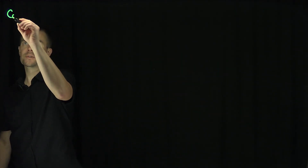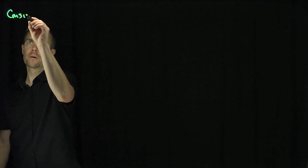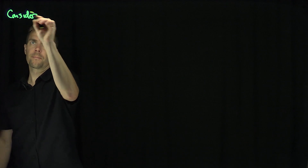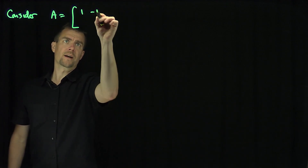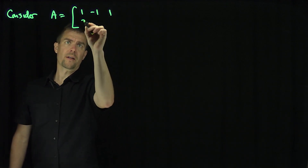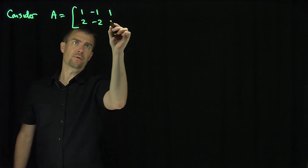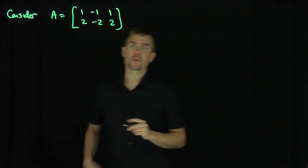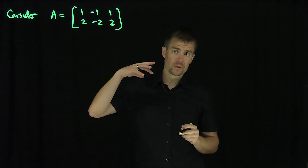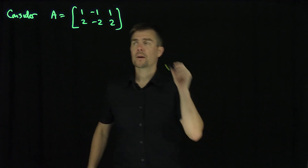Hello students. In this video we'll see an example of computing the Smith normal form of a matrix. Let's consider the matrix A, which is [[1, -1, 1], [2, -2, 2]]. We can see that the first row and the second row are multiples of each other.